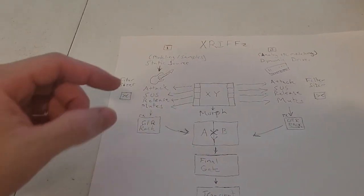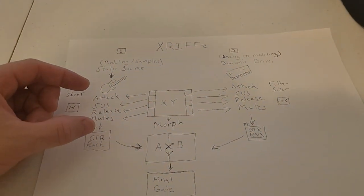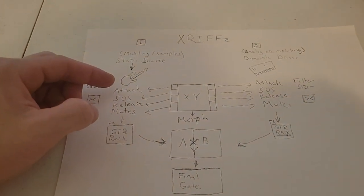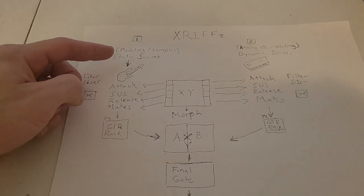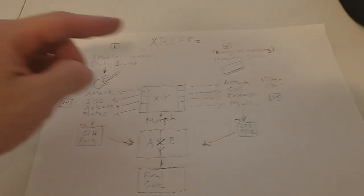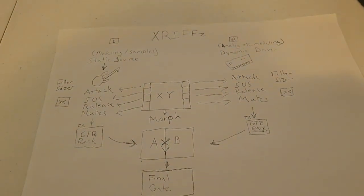So really quickly, one thing that I noticed is attack, sus, release, and mutes are critical to the articulations. Now you could have tons of these, but we're focused on these four because they're the most critical in terms of the X-Riff system. Because attack has so many ways of addressing attack with guitar synthesis and guitar modeling, and the same with synthesizers. Attack can mean so many things.